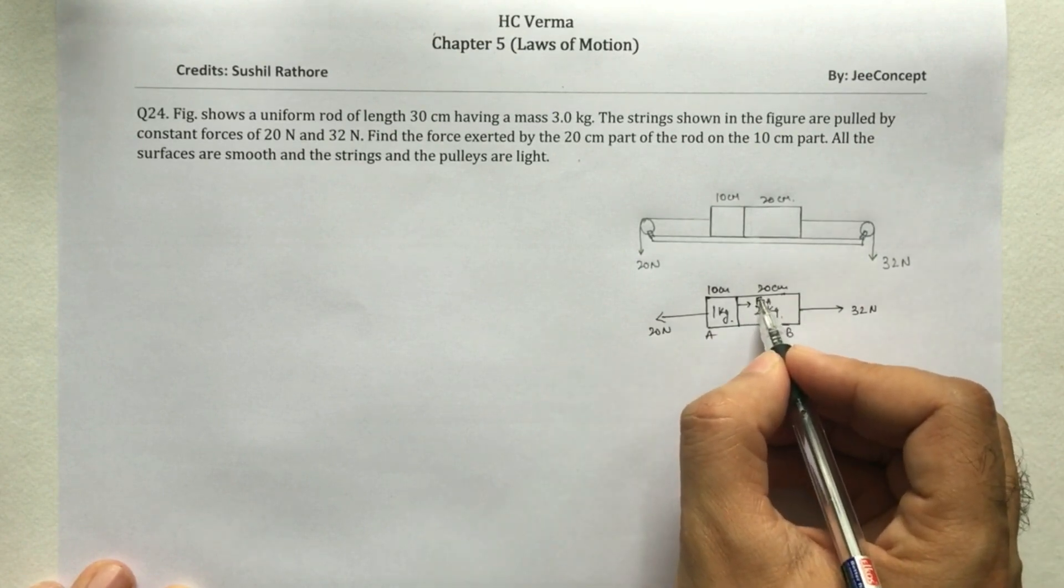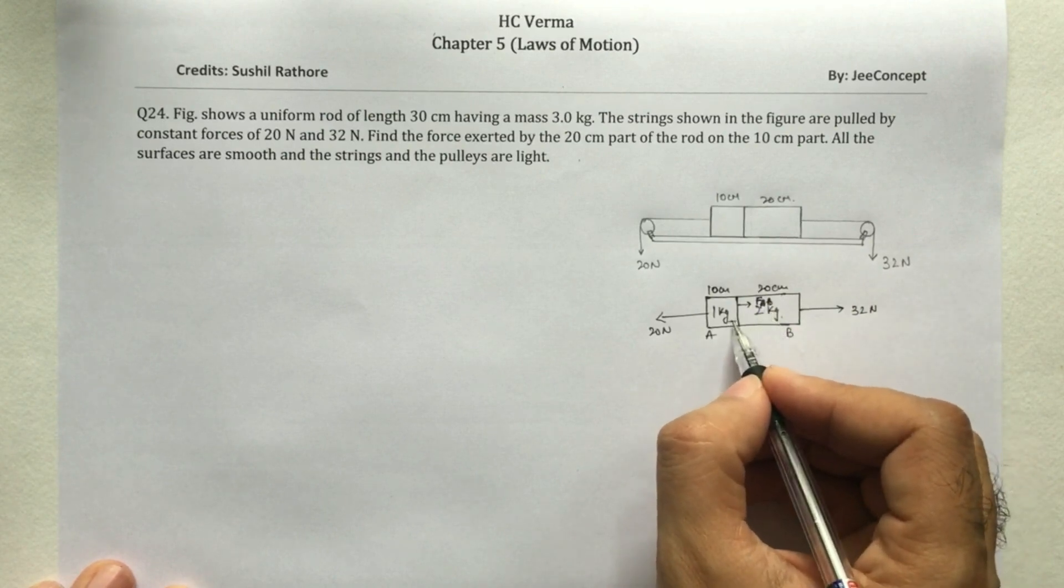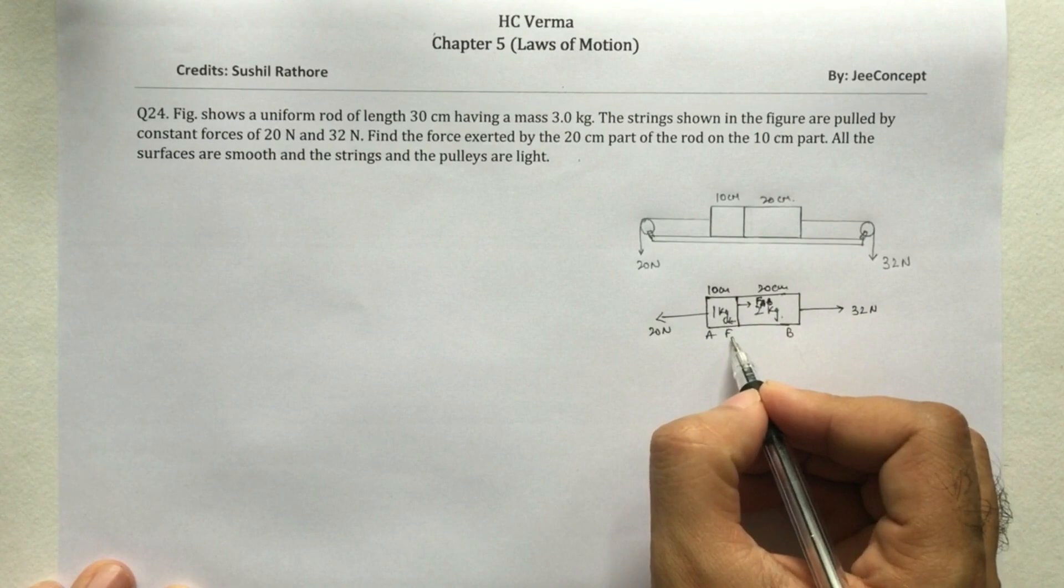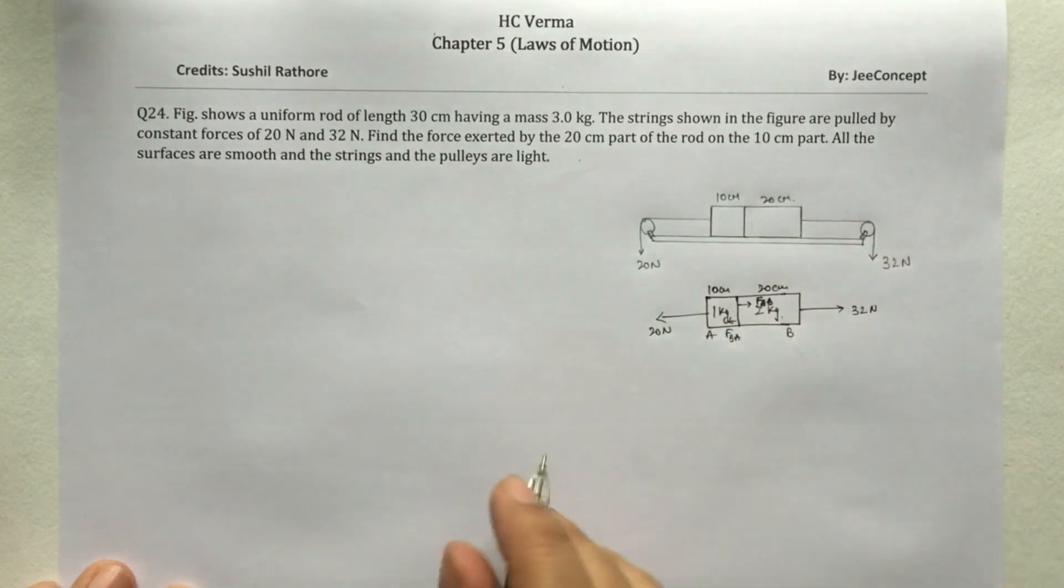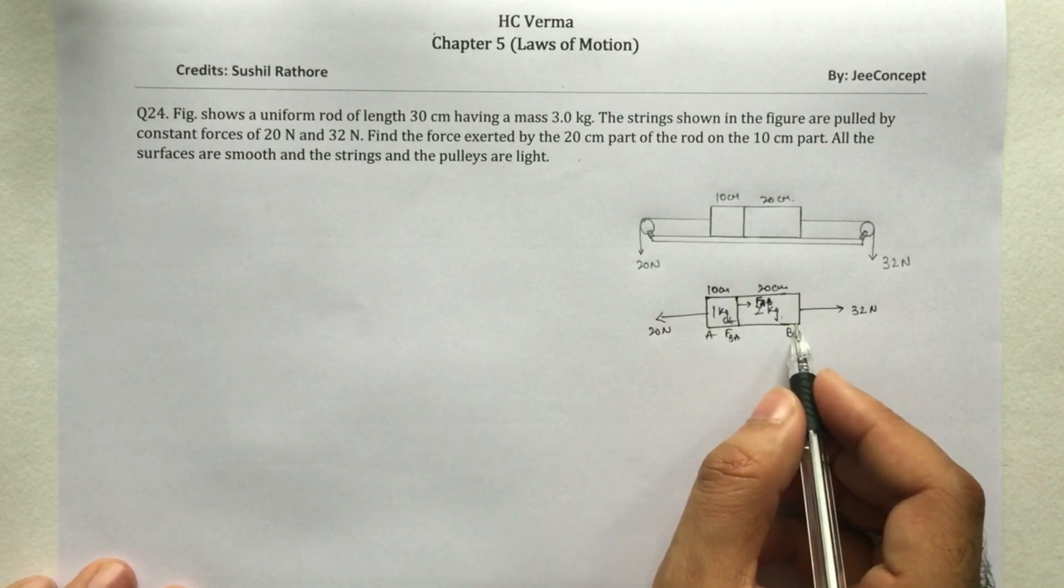So that means there is a force on A due to B and this is the force on B due to A. So using the free body diagram, we can easily solve this problem.